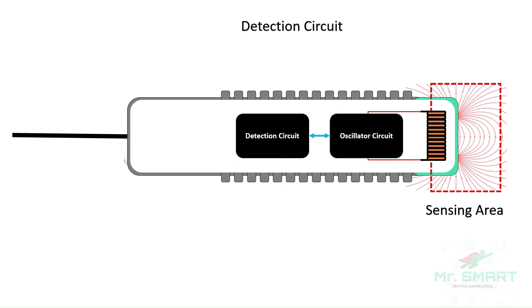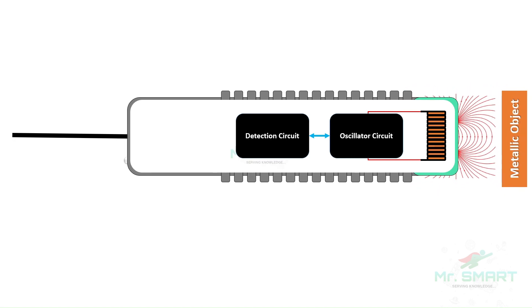The oscillator circuit and the coil are connected with a circuit called a detection circuit. The detection circuit monitors changes in the electromagnetic field produced by the coil. When a metallic object enters the sensor's detection range, it disrupts the electromagnetic field, causing changes in the sensor's output.